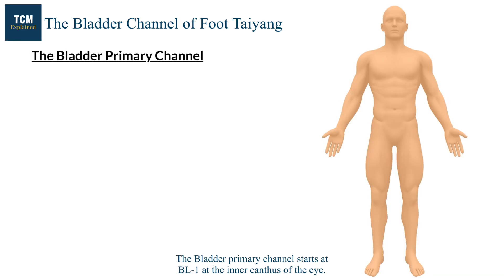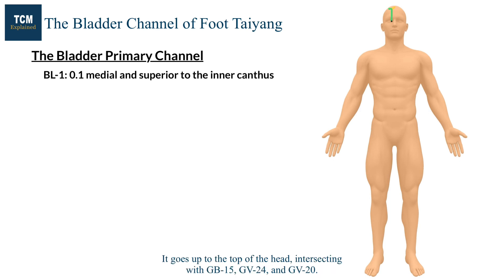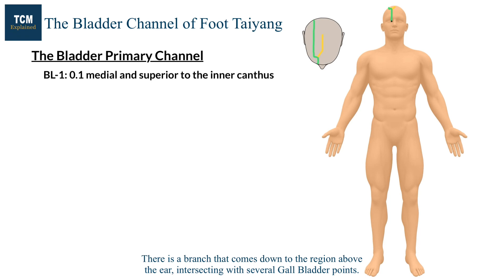The bladder primary channel starts at bladder 1 at the inner canthus of the eye. It goes up to the top of the head, intersecting with gallbladder 15, GV 24, and GV 20. There is a branch that comes down to the region above the ear, intersecting with several gallbladder points.